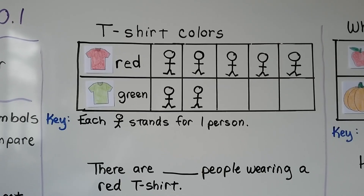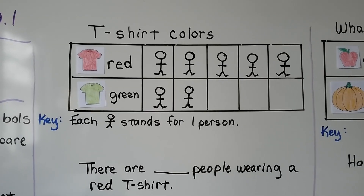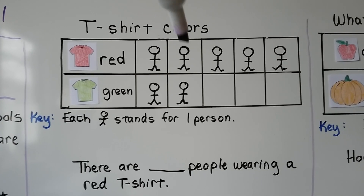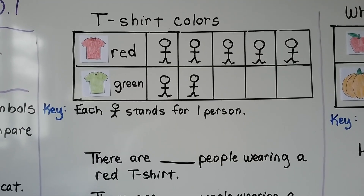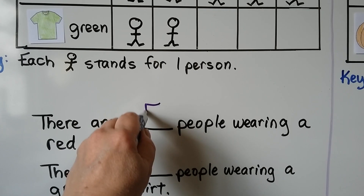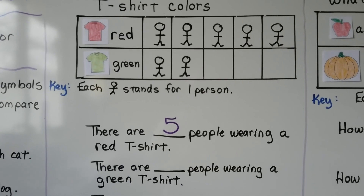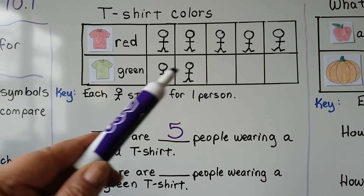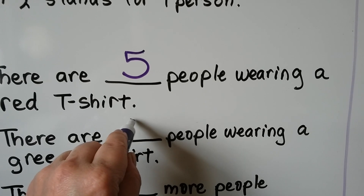So there are blank people wearing a red t-shirt. We can count each of these as one person — one, two, three, four, five. There are five people wearing a red t-shirt. There are blank people wearing a green t-shirt. We count one, two. There are two people wearing a green t-shirt.